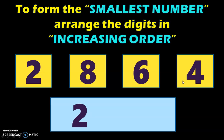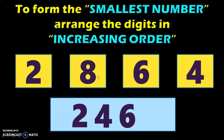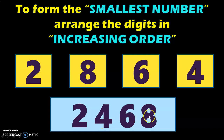So next, write down number 4. The number which is bigger than 4 is 6, so next write down number 6. And the biggest number among the four given numbers is 8, so write down number 8. The smallest number that is formed using the given set of four digits is 2468.